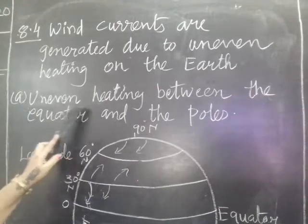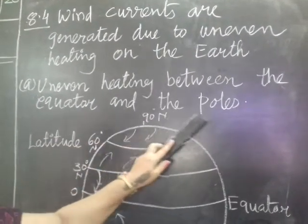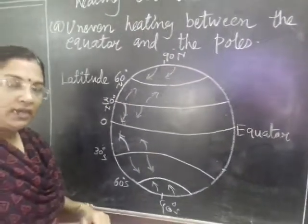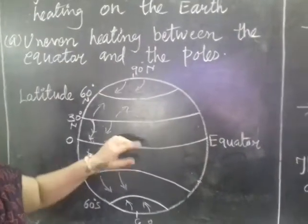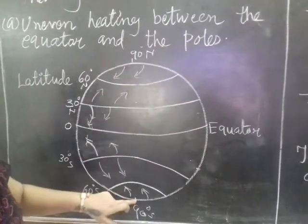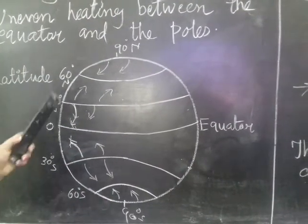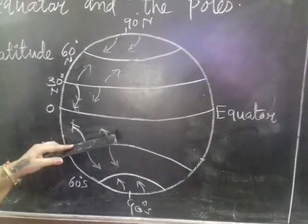The first one is uneven heating between the equator and the poles. How do wind currents are generated? It is because of uneven heating between the equator and the poles. Let us understand with this figure. Here it is earth globe figure I have drawn.